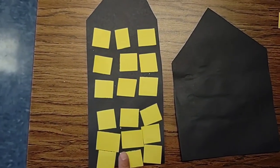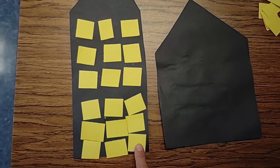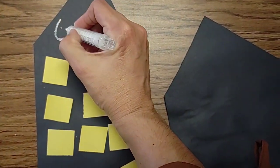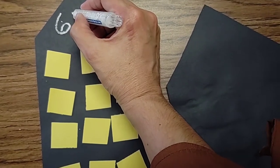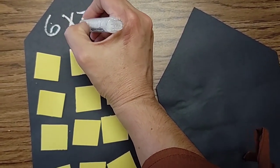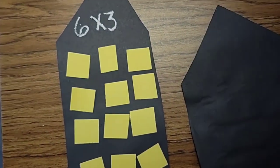Or you could do six plus six gives you twelve, plus six more gives you eighteen. And this is six times three. Six rows of three.